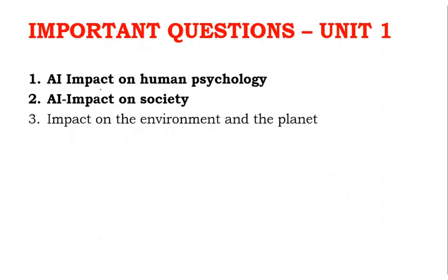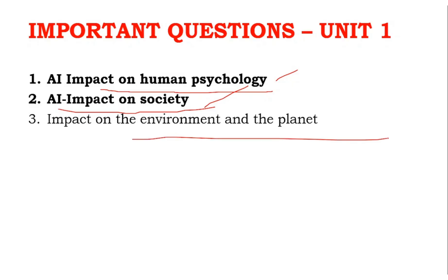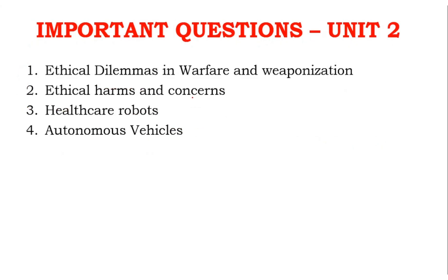For important questions: Unit 1 — impact on human psychology and impact on society, two questions are more than enough. For Unit 2, the key topics are warfare, weaponization, healthcare robots, and autonomous vehicles for Part C. Ethical harms and concerns is confirmed for Part B.